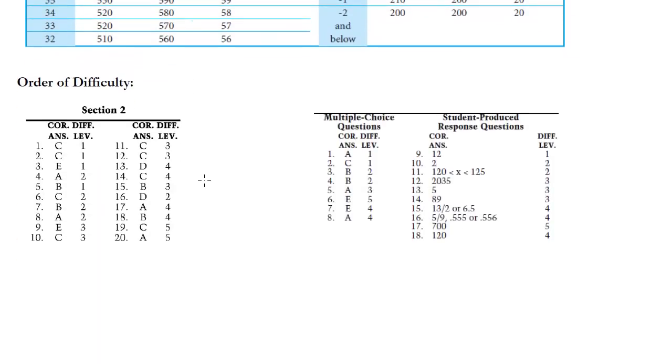Order of difficulty. The math section like the critical reading sentence completions and the grammar questions do have an order of difficulty. We can see in this 20 question section the order is going from ones to twos to threes to fours, jumping down to a two which is a bit strange, then back up to fours and fives. It's not an exact increase - there are little blips occasionally - but it is increasing from easy to medium to difficult.